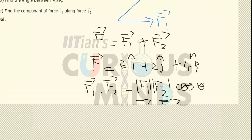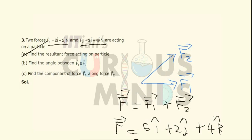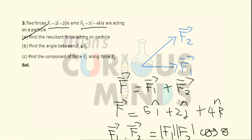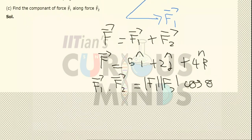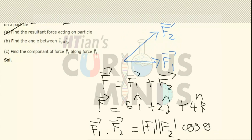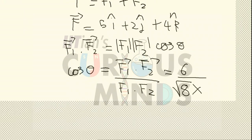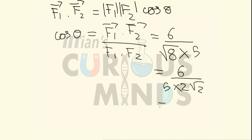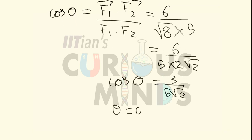The dot product F1·F2 = 2×3 = 6, since there is no ĵ component in F2 and no k̂ component in F1. The magnitude of F1 = √(2² + 2²) = √8 = 2√2, and the magnitude of F2 = √(3² + 4²) = 5. So cosθ = 6 / (5 × 2√2) = 3 / (5√2), giving θ = cos⁻¹(3 / 5√2).